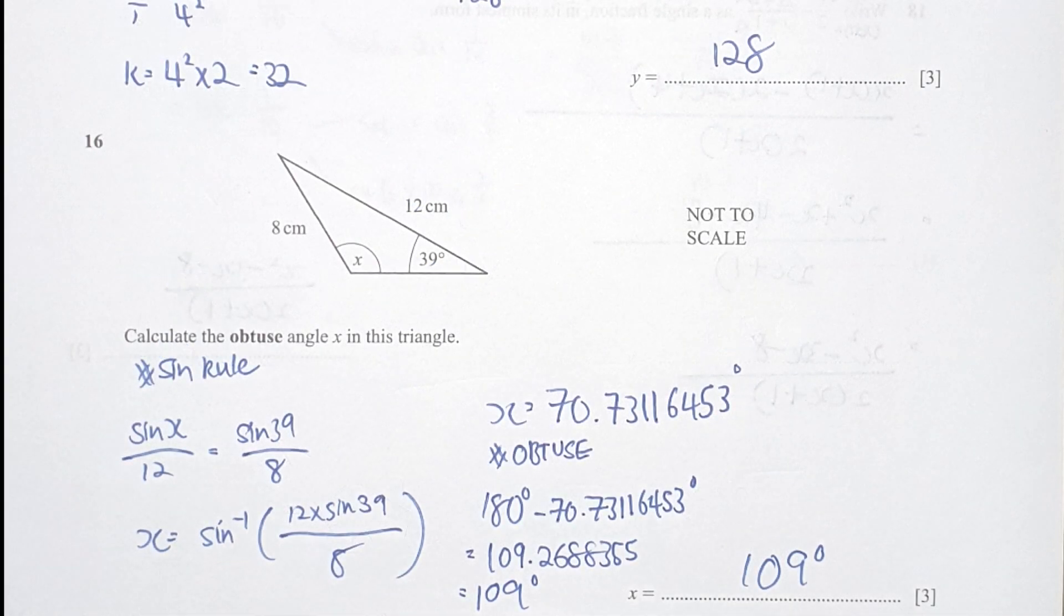Question 16 here, they mentioned about sine rule. So sine x over 12 equals to sine 39 over 8. So x equals to sine inverse of 12 times sine 39 over 8. Since they mentioned about the angle should be in obtuse, which is more than 90 less than 180. So you take 180 minus the results that you've gotten and correct it to three significant figures. You should get your final results as 109.